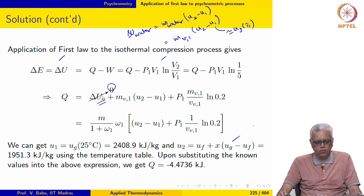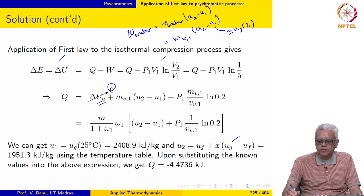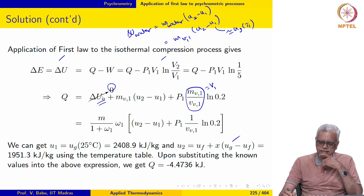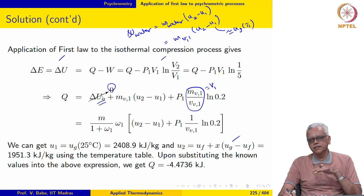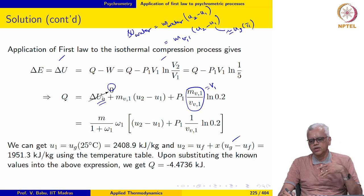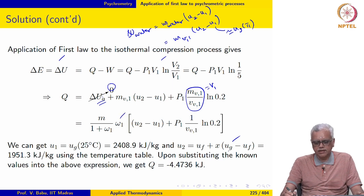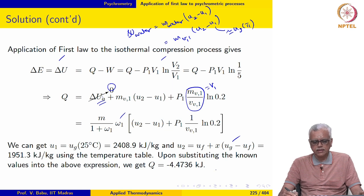Delta U for water is MV1 times (U2 minus U1). Since the water vapour was initially superheated, U1 is approximated as Ug(T1). U2 is evaluated as 1951.3 kJ/kg from the temperature table. Using Dalton's model, the initial volume is written in terms of the mass of vapour divided by the specific volume of the vapour, expressed in terms of omega and the mass of the mixture. Substituting all known values gives Q equal to minus 4.4736 kJ.